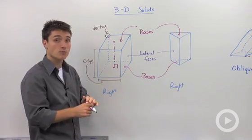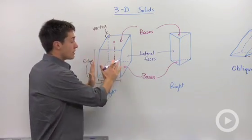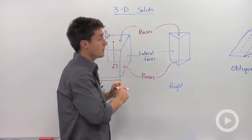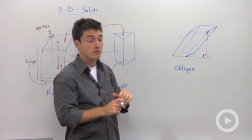However, the surface areas will be different. This right prism will have a lower surface area than this oblique prism.